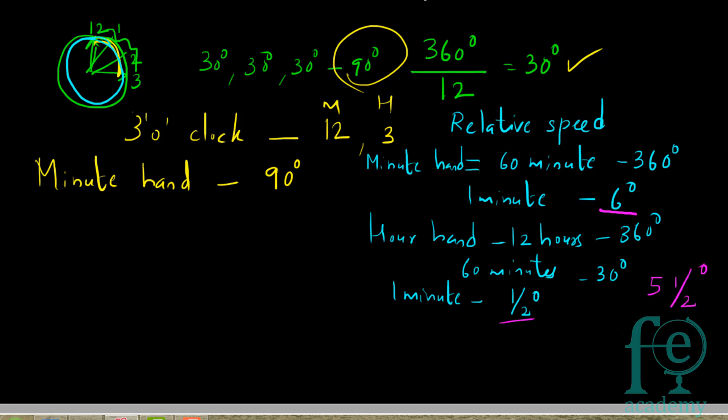So 5 and a half degrees per minute is the relative speed between the hour hand and the minute hand. Whenever you are doing these kinds of questions, you have to consider the relative speed only, because both the hour hand and the minute hand are moving. The relative speed is 5 and a half degrees per minute.